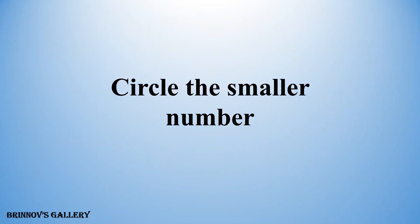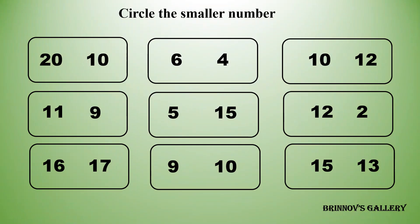Circle the smaller number. 20 and 10 — 10 is smaller than 20. 6 and 4 — 4 is smaller than 6. 10 and 12 — 10 is smaller than 12.